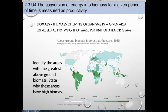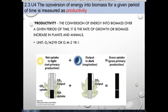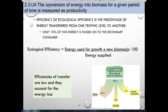Pause the video at this point and look at the graph on the right. Identify the areas with the greatest amount of above-ground biomass and state why these areas have high biomass. As humans, we continue to look for methods to harness solar radiation; however, we have to rely on plants to convert solar radiation into biomass that all animals can eat. Productivity is the conversion of energy into biomass over a given period of time — it is the rate of growth or biomass increase in both plants and animals. The chemical energy in the molecules of glucose and stored compounds is available to consumers, but not all of that energy is transferred.